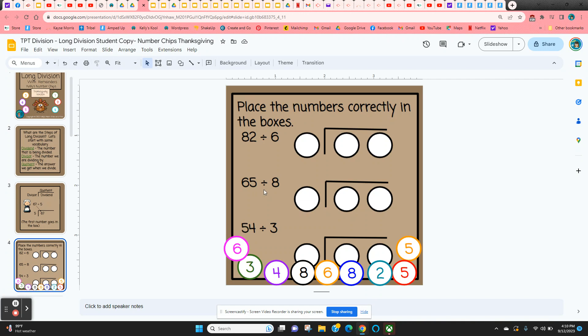So it starts out pretty simple for the student. It's just having them place the numbers correctly. So 82 divided by 6. And we have all the number chips the students need on every slide. So they're going to use all of them. And that way if they get to the end and the numbers aren't working, they know they've made an error and they need to go back and check again.